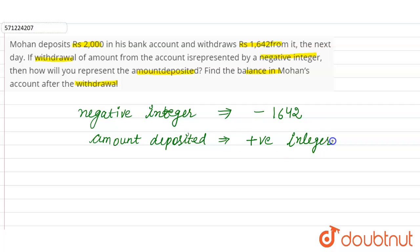In the next part, it is asking to find the balance in Mohan's account after the withdrawal. So balance will be equal to amount deposited minus amount withdrawal.